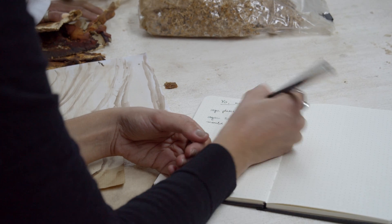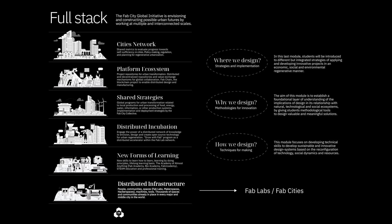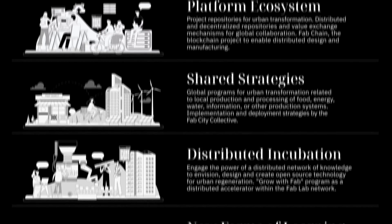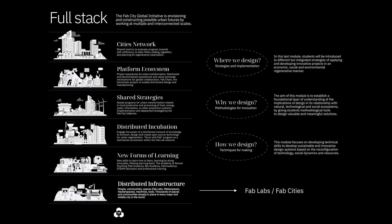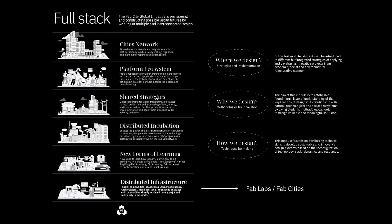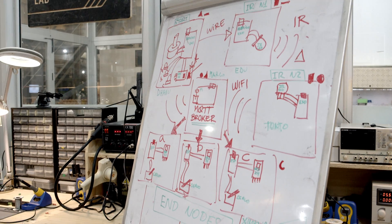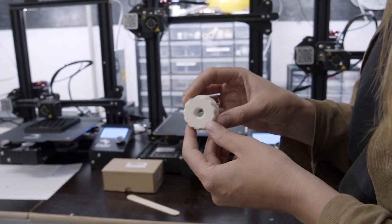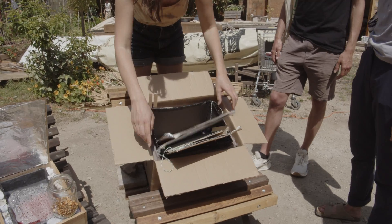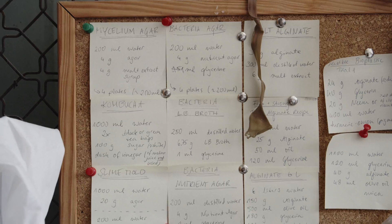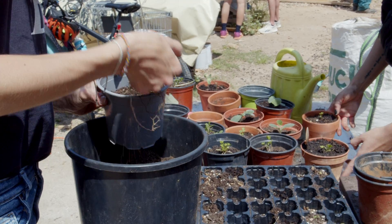The program is structured around three main modules, each one of one trimester, plus a final project implementation. Each module focuses on different levels of the Fab City full stack and addresses three main questions: how we design, why we design, and where we design. The final project can take the shape of a technology, a system, or a service. Students can deploy everything they have learned within their local ecosystem — inside the node, their working places, local community, or their town.